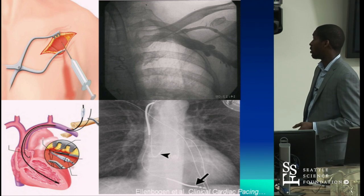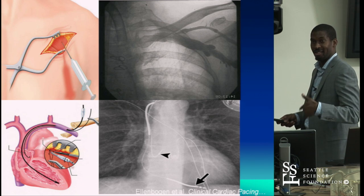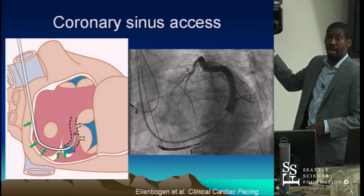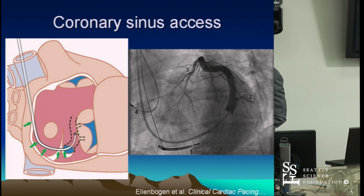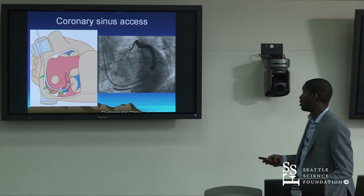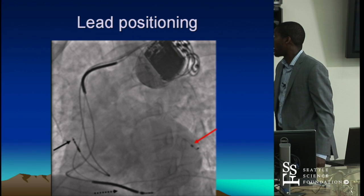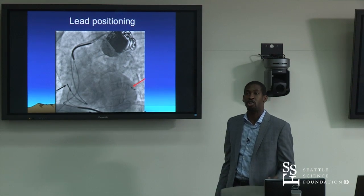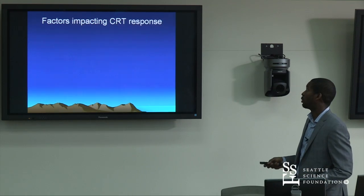The CRT implant with current tools doesn't take much longer than a standard defibrillator system implant because tools have been customized over several generations. We use preformed catheters to get into the coronary sinus, typically do a balloon-occlusive venogram in the CS to identify good branches. We used to always go for the posterolateral branch and stay away from the anterior, however anterior lead placements can actually do okay. Final X-ray confirms lead position of the atrial, RV, and LV lead. The greater inter-electrode distance between RV and LV was associated with bigger response; now we can measure this electrically with QLV.